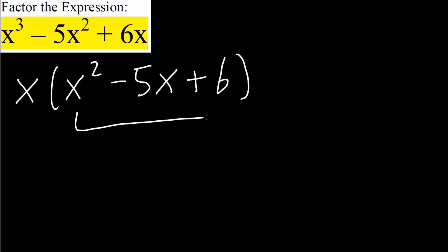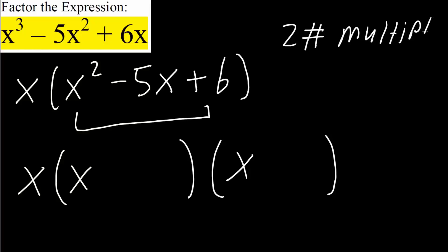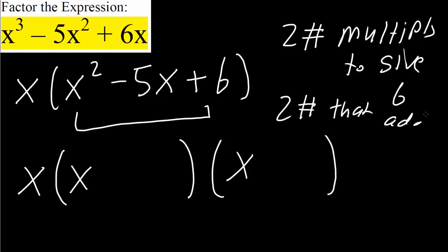Now we attempt to factor the trinomial x squared minus 5x plus 6. Since it's an x squared, we write x times x inside two sets of parentheses. We need two numbers that multiply to give us 6, and also two numbers that add to give negative 5.